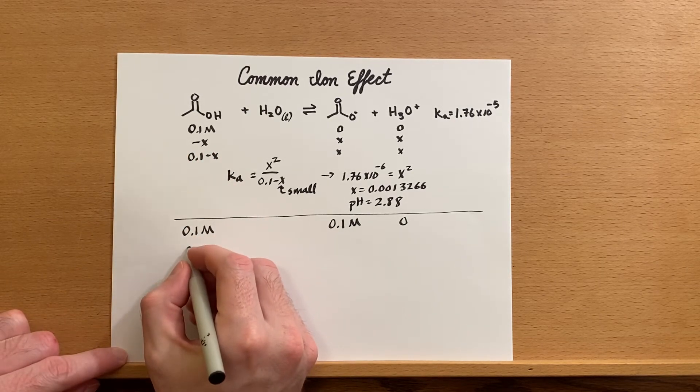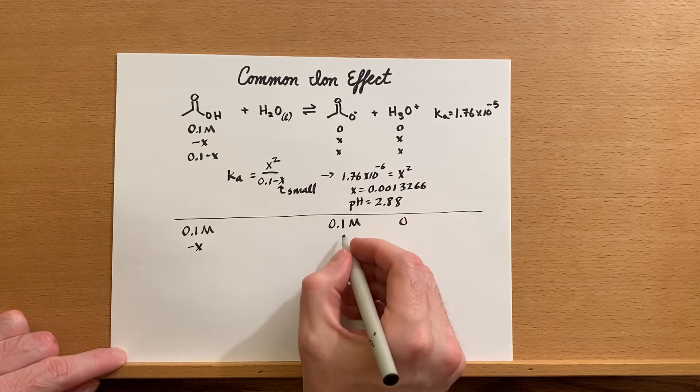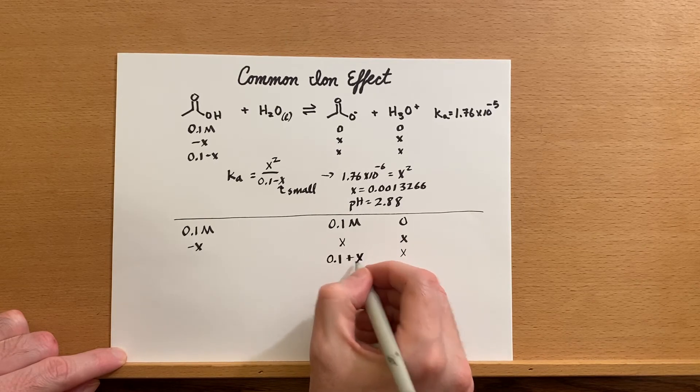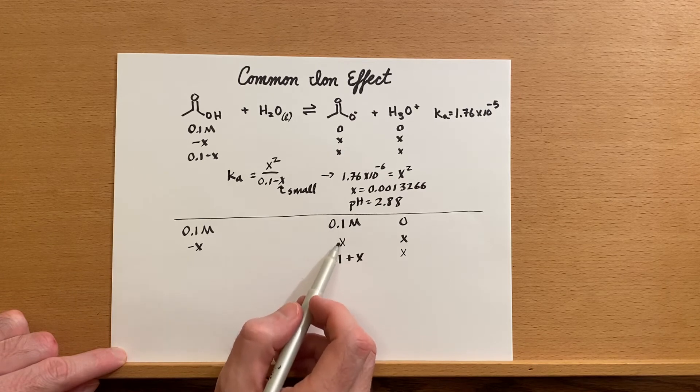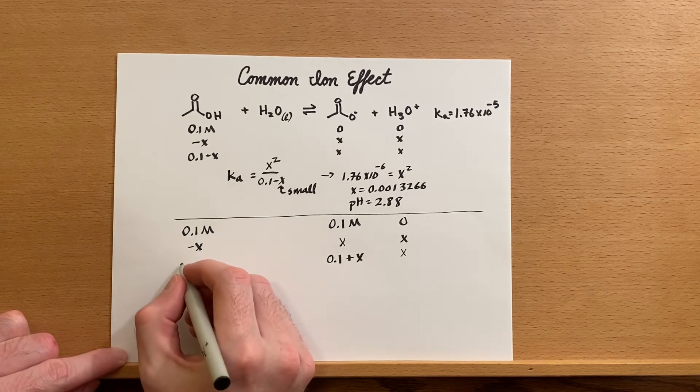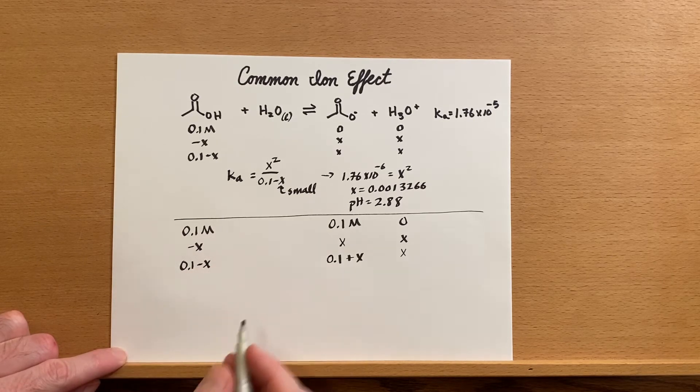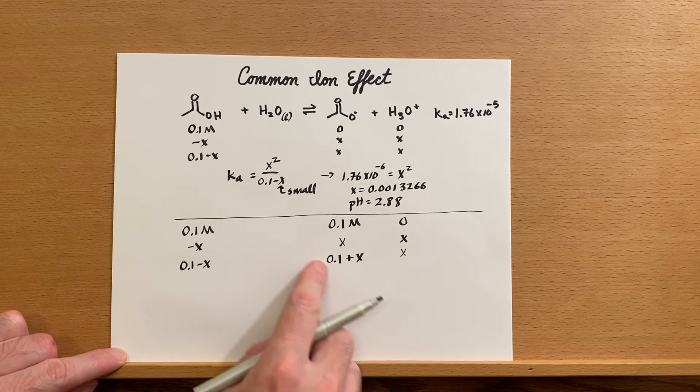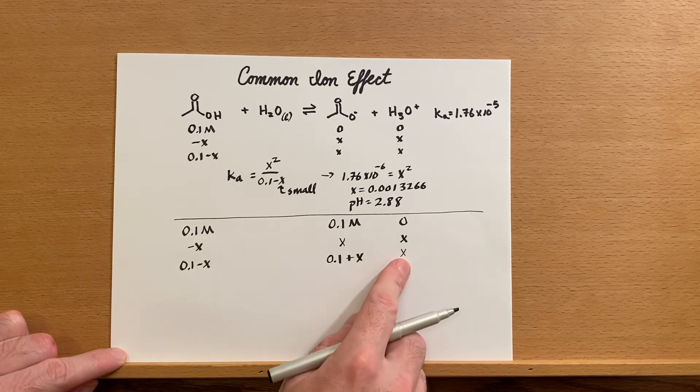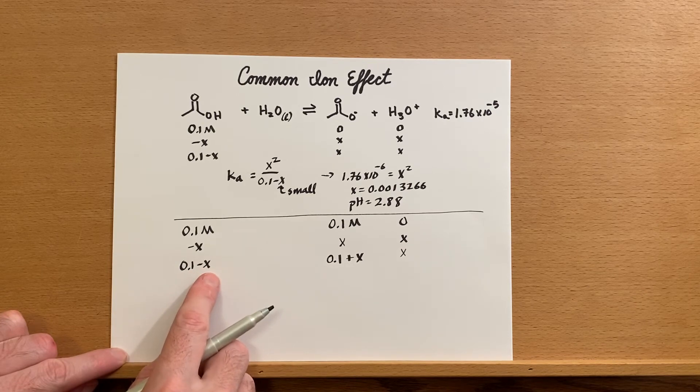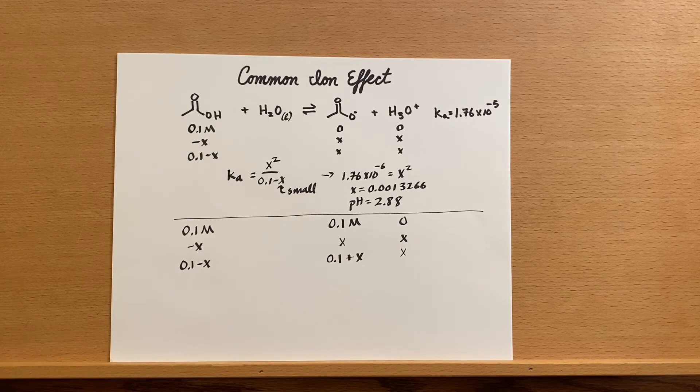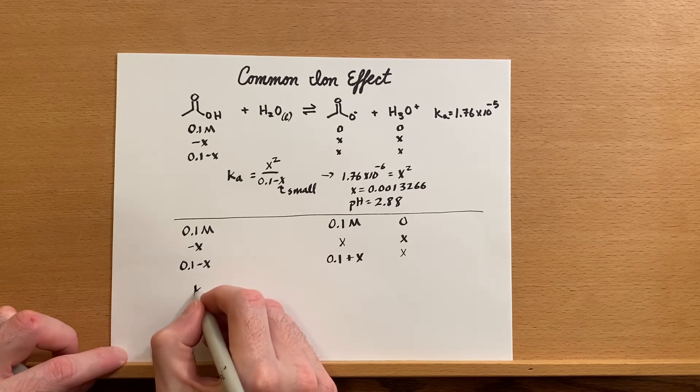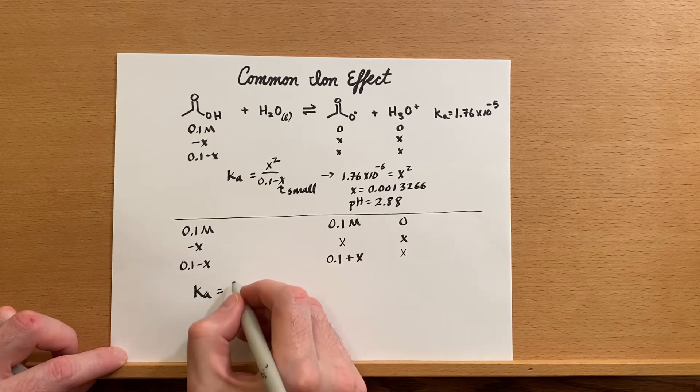We've got minus X over here, we have plus X and plus X there. Now in this case we have 0.1 plus X, so that's what I've written there, and here we still have 0.1 minus X. Now if we put this in our Ka expression, we'll have our acetate ion times our hydronium ion divided by the acetic acid concentration. Let's just plug those in and see what happens to our Ka.